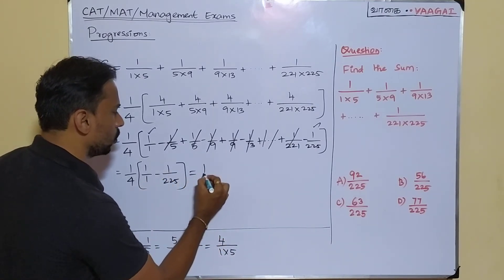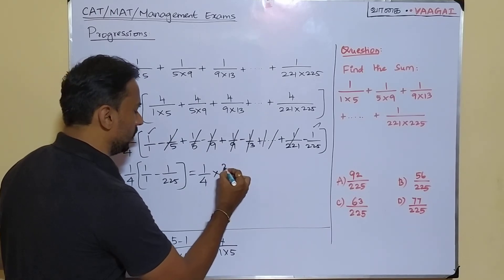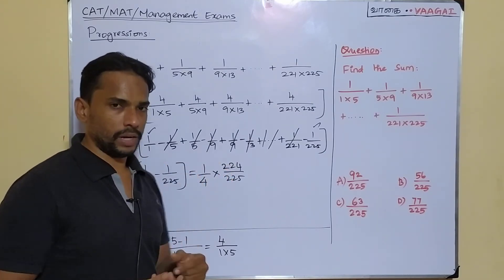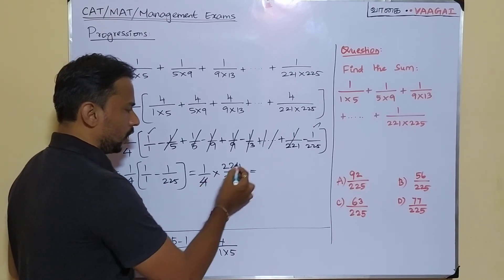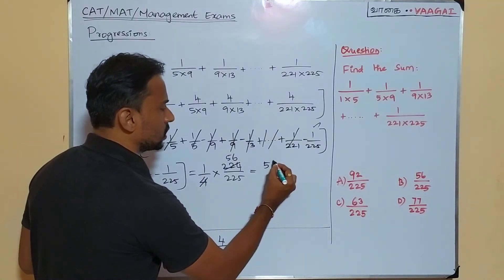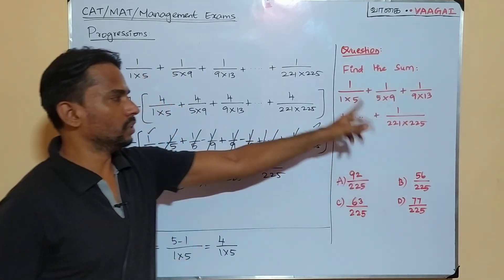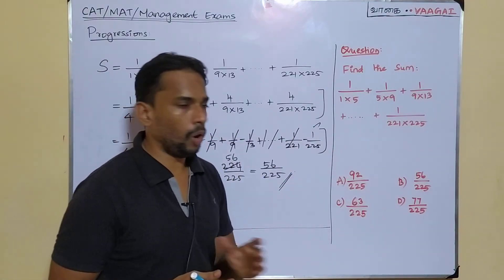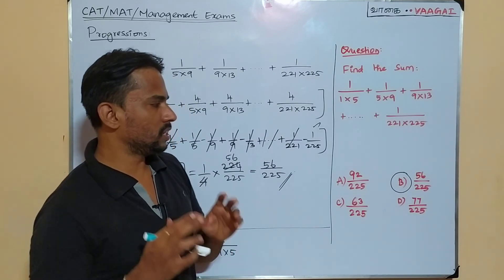We now have S = 1/4 × (1 − 1/225). Simplifying inside: 1 − 1/225 = 224/225. So S = 1/4 × 224/225. Cancelling 4 into 224 gives 56. Therefore S = 56/225, which matches option B. The answer is 56/225.